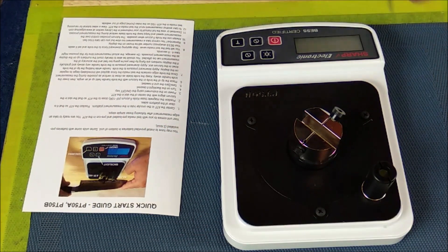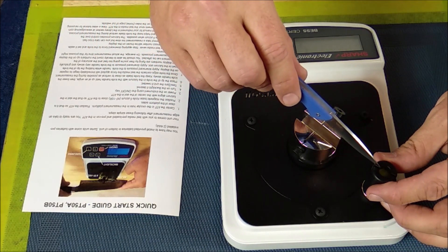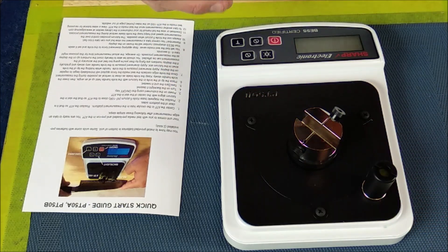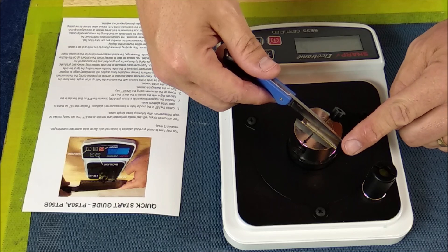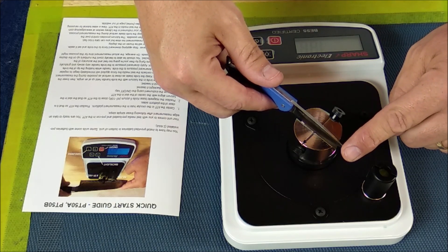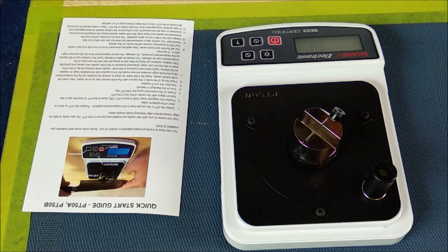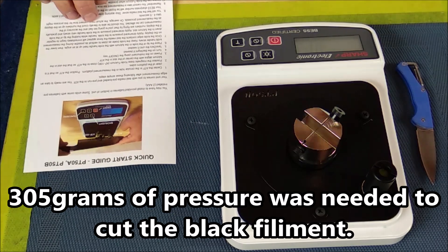Usually with longer knives you would rest the tip of the knife in here and then you would slide down. But since this knife is too short, you just go straight down on that filament with even pressure, nice slow even pressure until it cuts through. It cut through at 305.